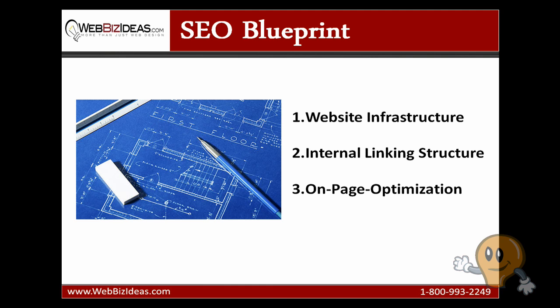These are the three main areas that are usually included in an SEO blueprint: one, website infrastructure; two, internal linking structure; and three, on-page optimization.